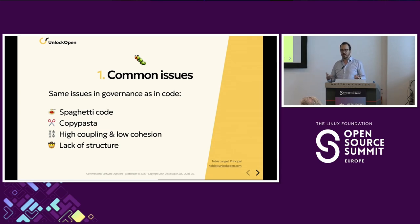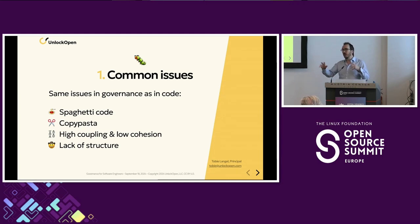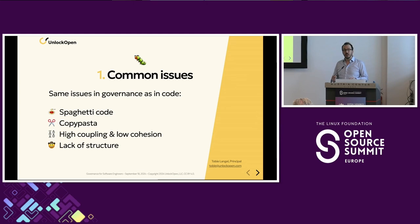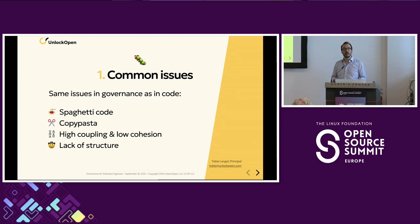The other issue is high coupling and low cohesion — different parts of governance tied together in really odd ways that make it really hard to separate or update things. And then lack of structure: it's all over the place, and the authority delegation I was talking about before is often extremely hard to perceive when you look at governance of a foundation. That's an example of a lack of structure.